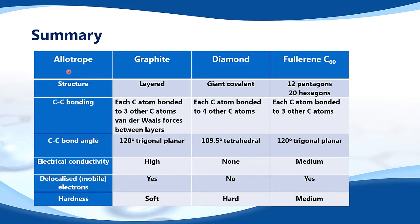Here is a summary comparing all three allotropes. Graphite has a layered structure; diamond has a giant covalent structure; and fullerene has a structure of 12 pentagons and 20 hexagons. For bonding: in graphite, each carbon atom is bonded to three others with van der Waals forces between layers; in diamond, each carbon is bonded to four others; and in fullerene C60, each carbon is bonded to three others. Bond angles: graphite is 120 degrees trigonal planar; diamond is 109.5 degrees tetrahedral; fullerene C60 is 120 degrees trigonal planar.